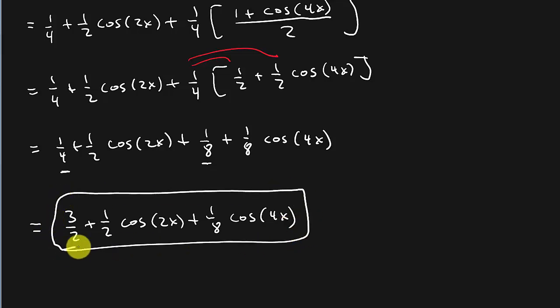So this is something you would need to do if you had to integrate cosine to the fourth x. Okay? And I mean, you would have to simplify it to this so you could integrate it. And then sine to the fourth would be done similar. So I'll leave that to you to try on your own.